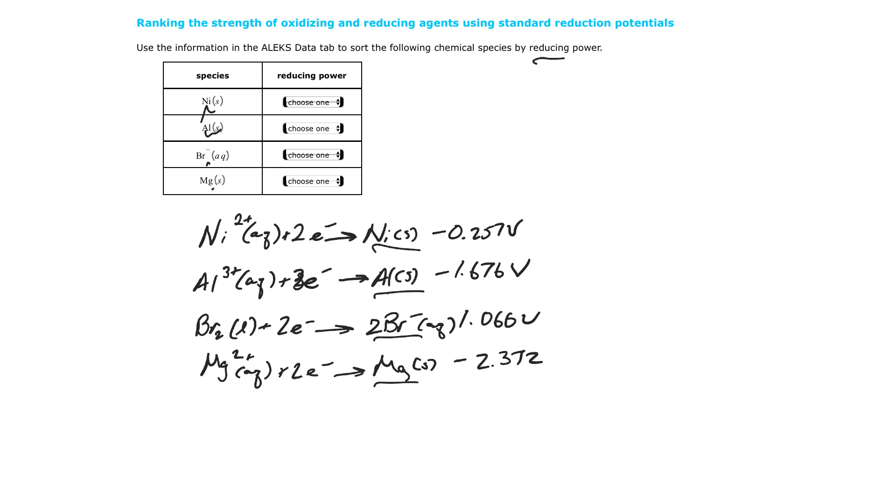So what you're going to see is if you were to reverse this reaction, it switches the sign of the voltage. So going backwards, if I were to just do one as an example, I would do nickel solid yields nickel 2 plus aqueous plus 2 electrons. Its voltage is going to be positive 0.257 volts.